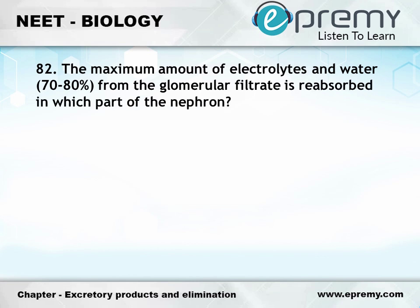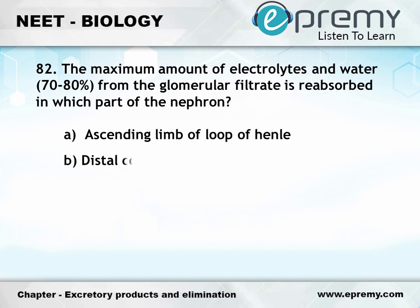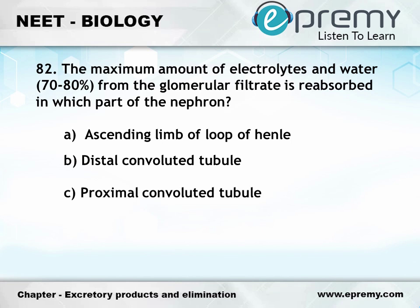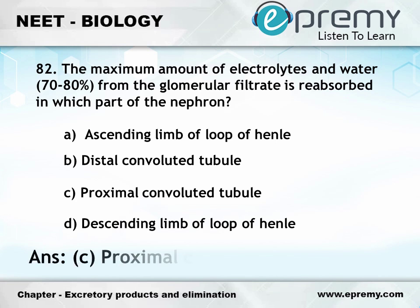Question number 82: The maximum amount of electrolytes and water from the glomerular filtrate is reabsorbed in which part of the nephron? Option A: Ascending limb of loop of Henle, Option B: Distal convoluted tubule, Option C: Proximal convoluted tubule, Option D: Descending limb of loop of Henle. The answer is Option C: Proximal convoluted tubule.